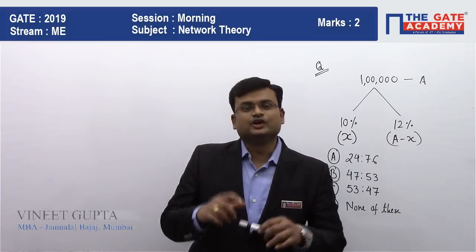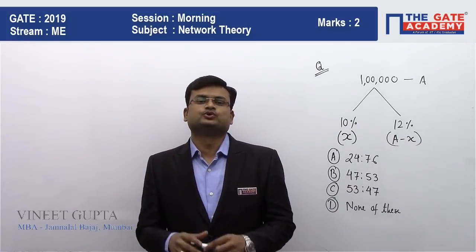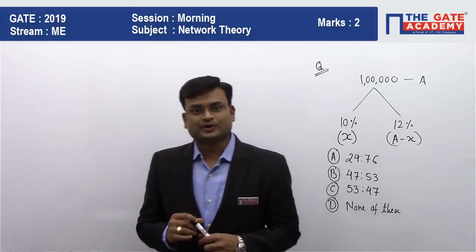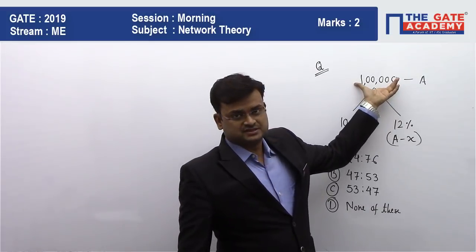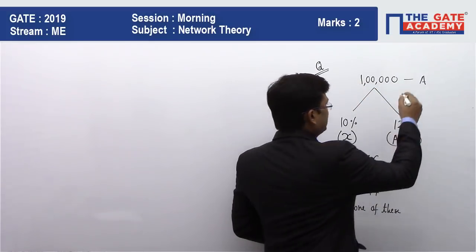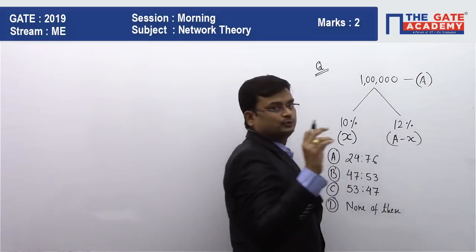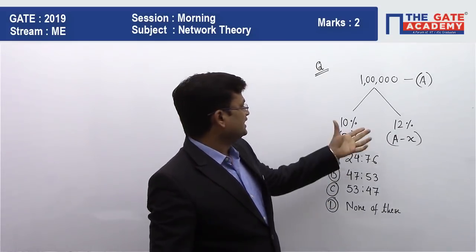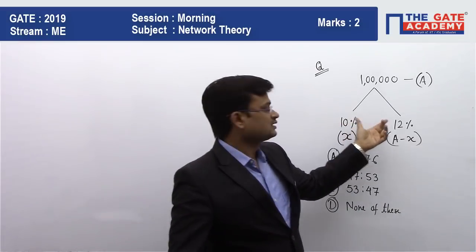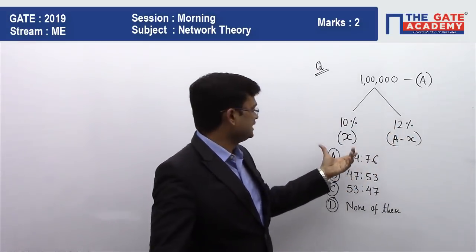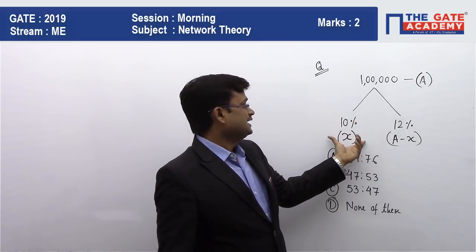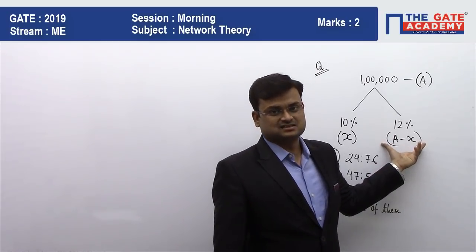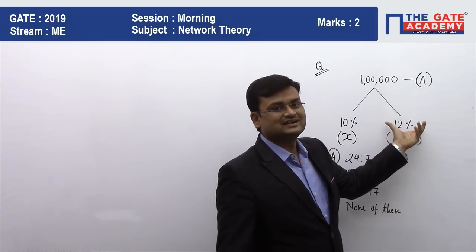In this video, we'll be solving a general aptitude question from the percentage chapter. The question says that a person has 1 lakh rupees, which we'll assume to be 'A'. There are two investment avenues: one giving 10% return and another giving 12%. Let's assume 'x' is invested at 10% and 'A minus x' is invested at 12%.